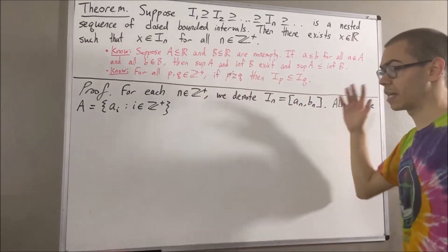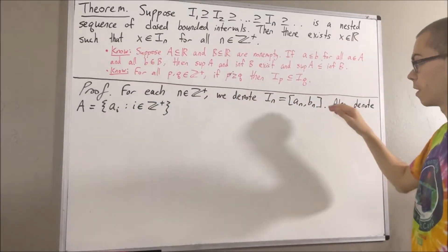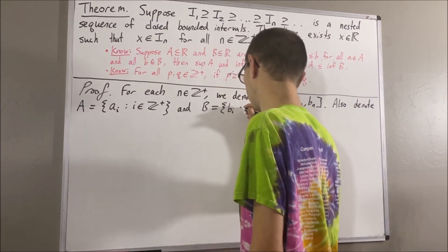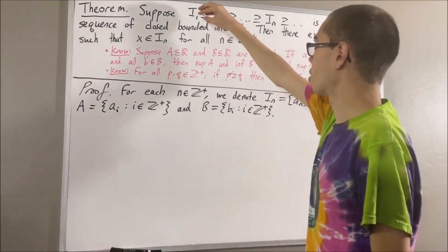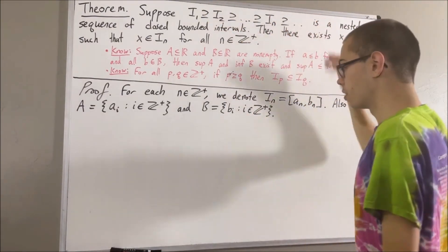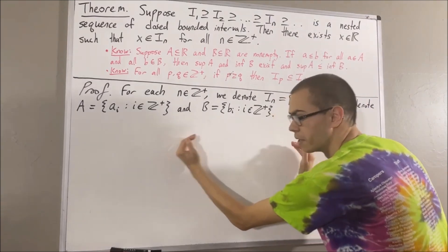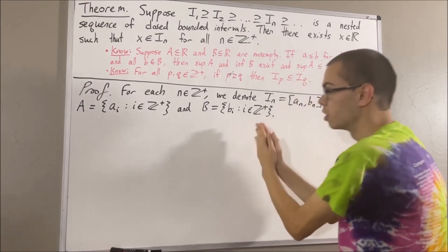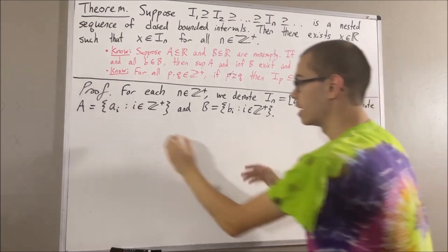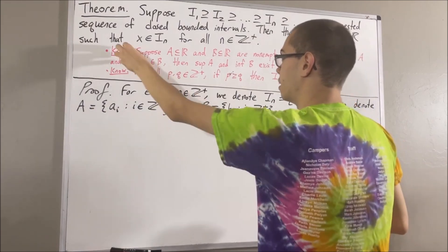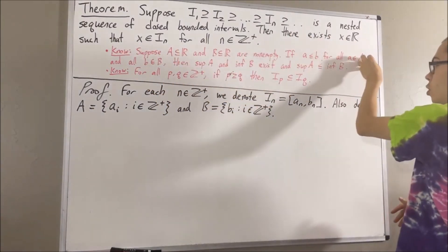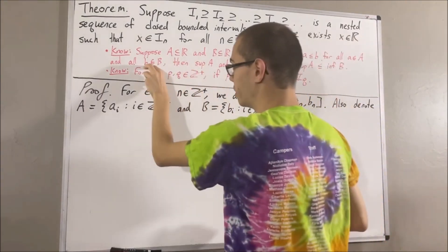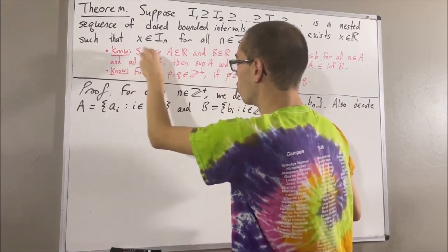Similarly, we'll denote the set capital B by the set consisting of b1, b2, b3, and so on and so forth. Now, since our sequence is nested, we're going to have something like a1, b1, a2, b2, a3, b3, a4, b4, and so on. So we expect A and B to satisfy this property: we expect a to be less than or equal to b for all a in A and all b in B. And so we're going to prove that.